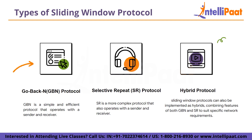In practice, sliding window protocols can also be implemented as hybrids, combining features of both GBN and SR to suit specific network requirements. For instance, a protocol may use GBN for positive acknowledgments and SR for negative acknowledgments, optimizing efficiency and reliability. The choice between GBN and SR depends on factors like network error rate, bandwidth, and implementation complexity. GBN typically performs well in low-error environments and is simpler to implement.